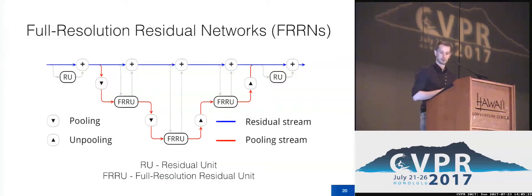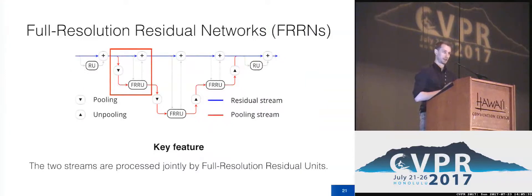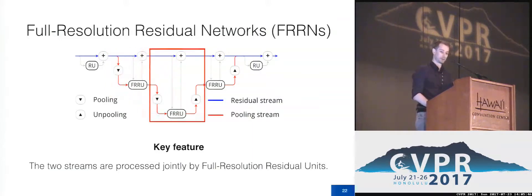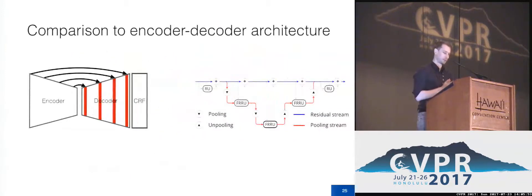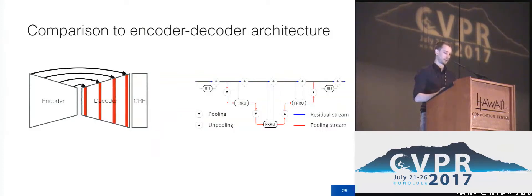This is what a full-resolution residual network looks like. On the top, in blue, you have the residual stream, which stays at the full image resolution. On the bottom, in red, you have the pooling stream, which implements the encoder-decoder hierarchy. The unique feature is that the two streams are processed simultaneously using full-resolution residual units. This allows us to build up a rich semantic representation of the image at the full image resolution progressively throughout the network. In contrast, a traditional encoder-decoder hierarchy only achieves the full-resolution representation at the very last layers, where semantically rich representations from the decoder must be merged with very early features from the encoder.